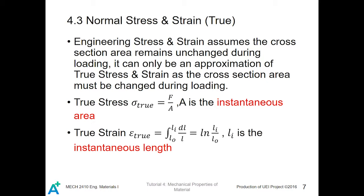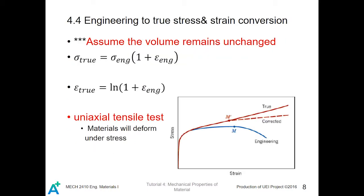True strain is defined as the integration from the instantaneous length to the original length. dL over L, which is equal to ln Li. Li is the instantaneous length over the Lo. Lo is the original length. How can we convert true stress and strain to the engineering stress and strain? Or we convert the engineering stress and strain to the true stress and strain? We need to first assume the volumes of the solid remains unchanged during the loading process. True stress is equal to the engineering stress times 1 plus the engineering strain, and true strain is equal to ln 1 plus the engineering strain.